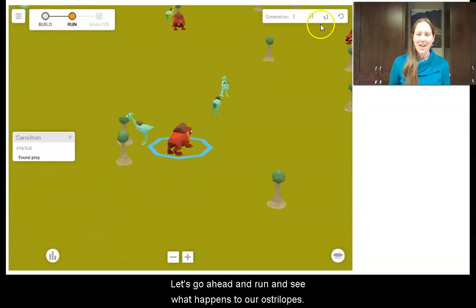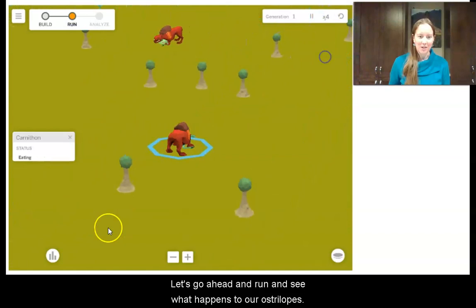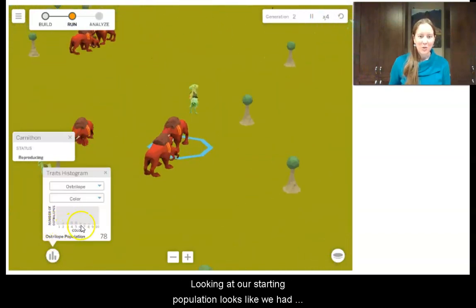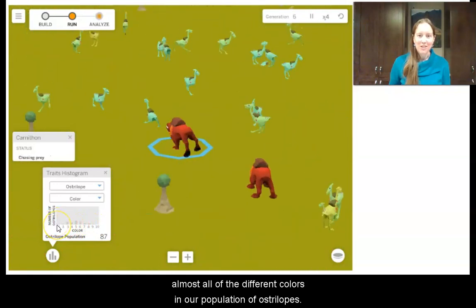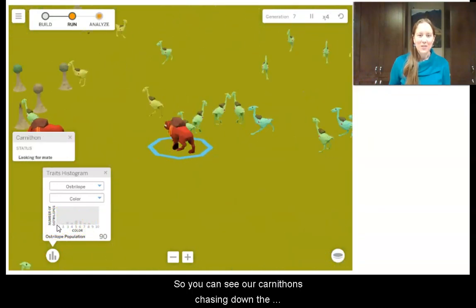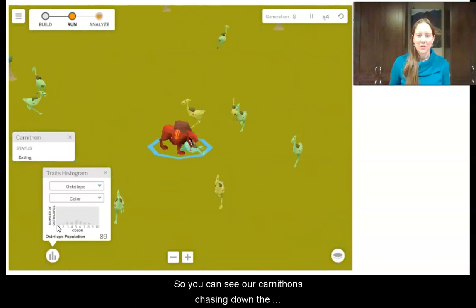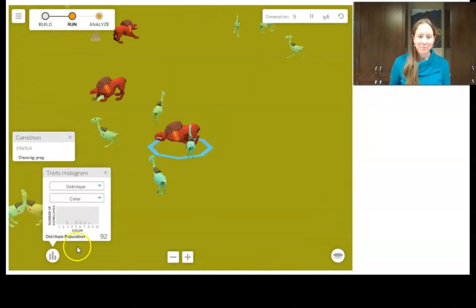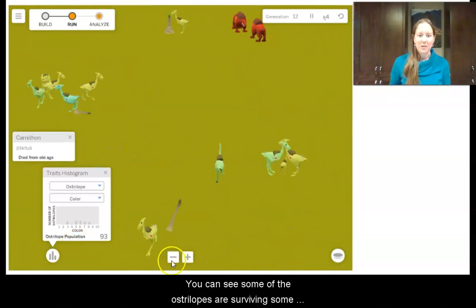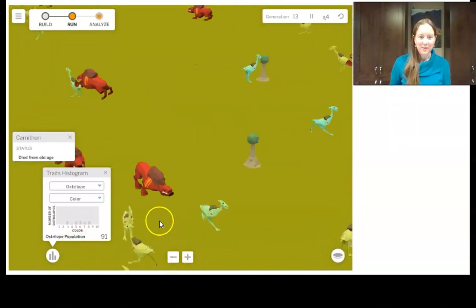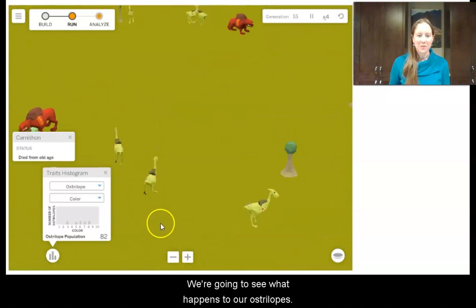Let's go ahead and run and see what happens to our ostrilopes. Looking at our starting population, it looks like we had almost all of the different colors in our population of ostrilopes. You can see our carnithons chasing down those ostrilopes and eating them. We can see some of the ostrilopes that are surviving, some of them are reproducing. We're going to see what happens to our ostrilopes.